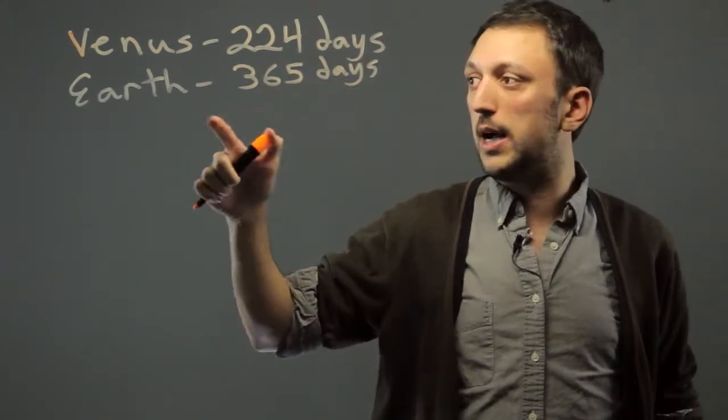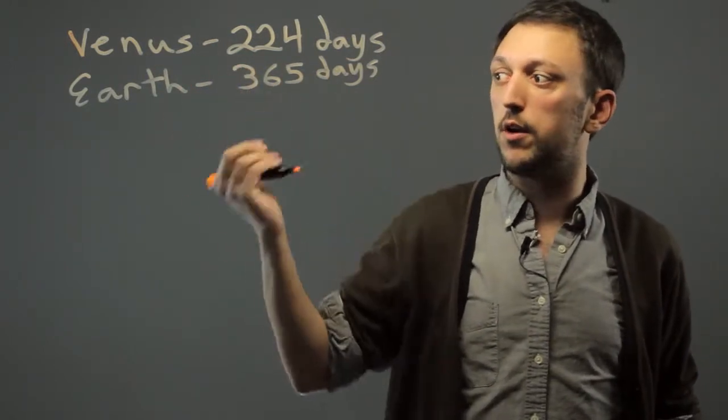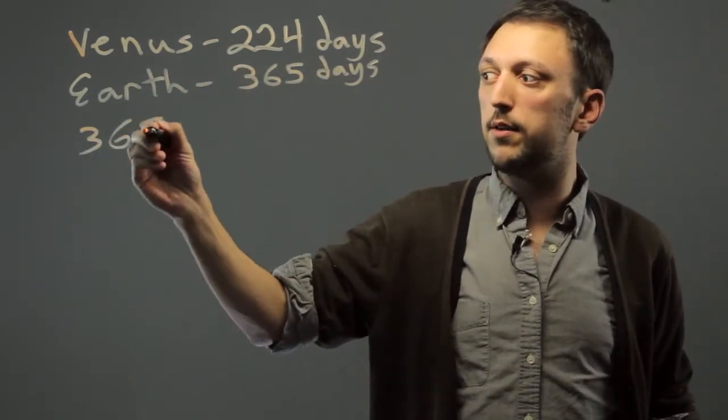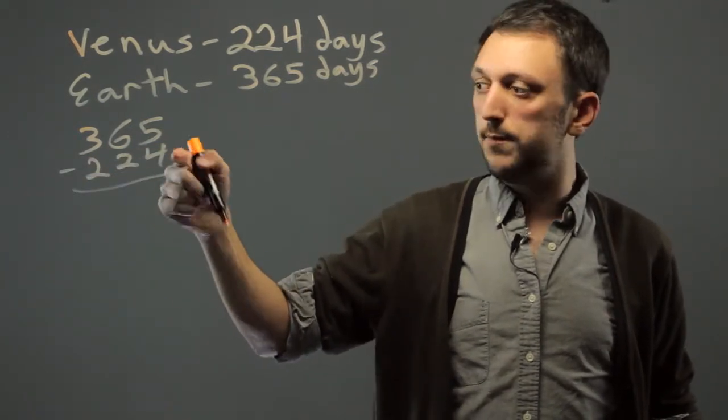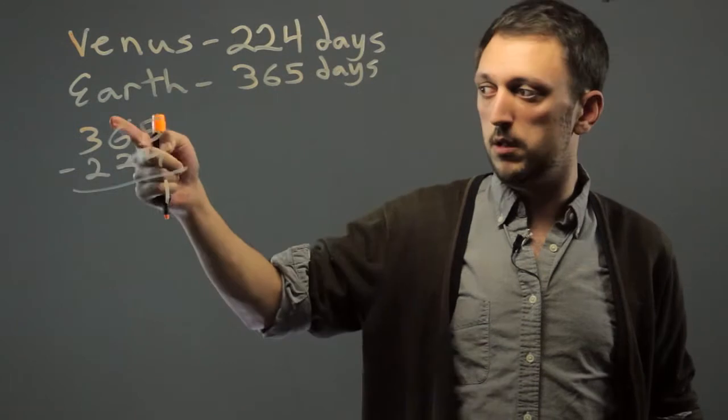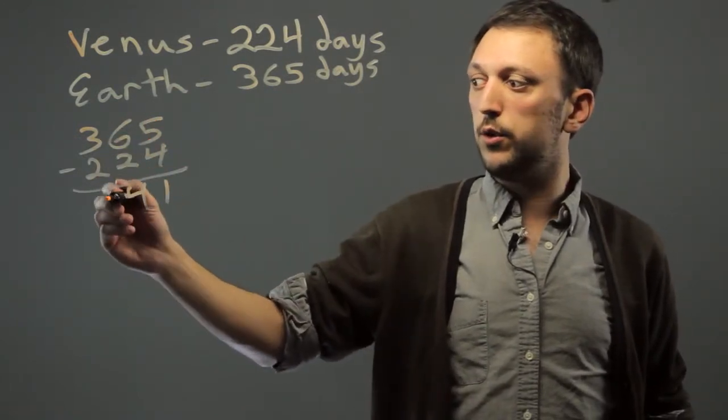So if we want to figure out how much longer Earth years are than Venus years are, we do 365 minus 224. So 5 minus 4 is 1, 6 minus 2 is 4, 3 minus 2 is 1.